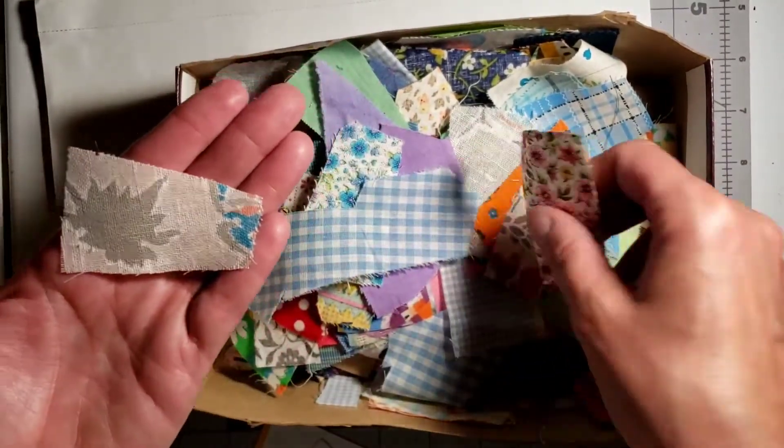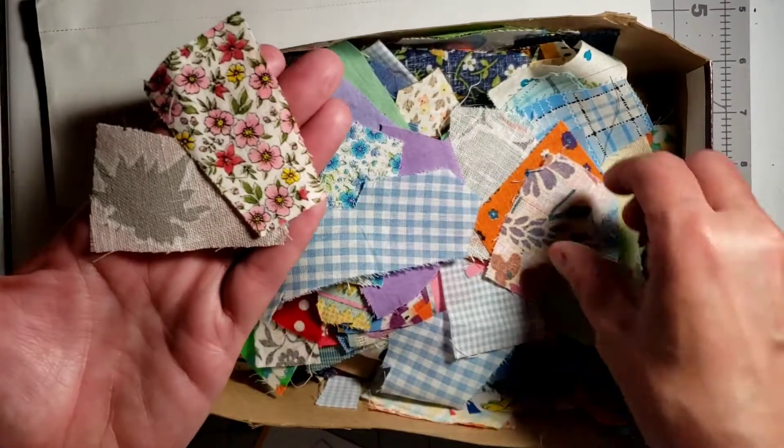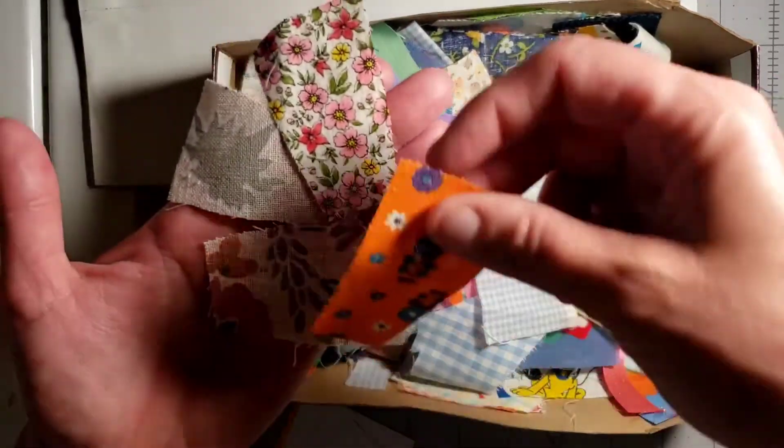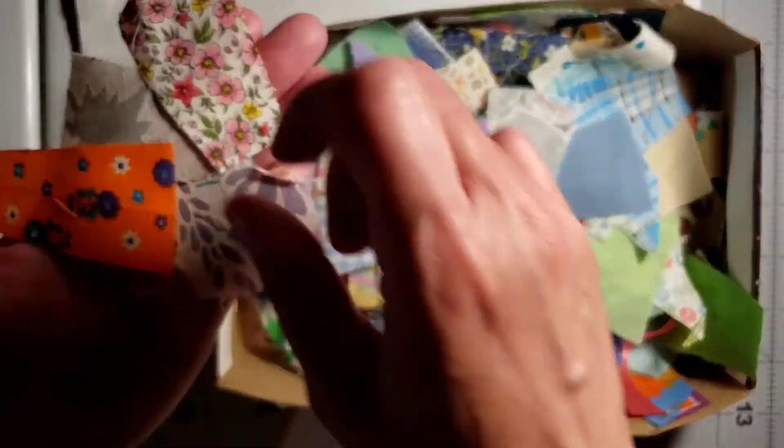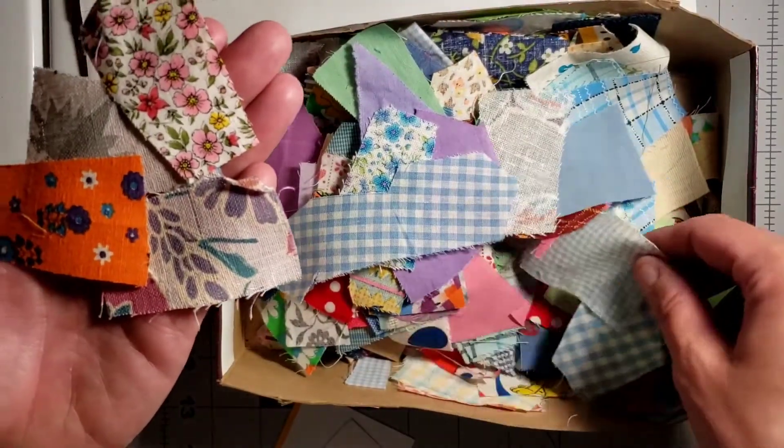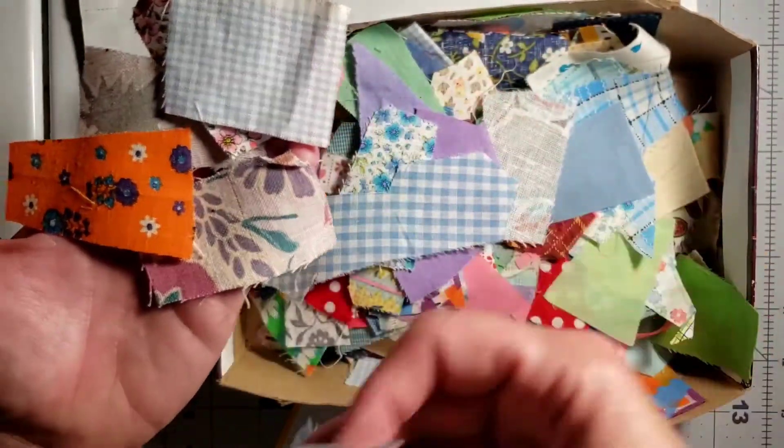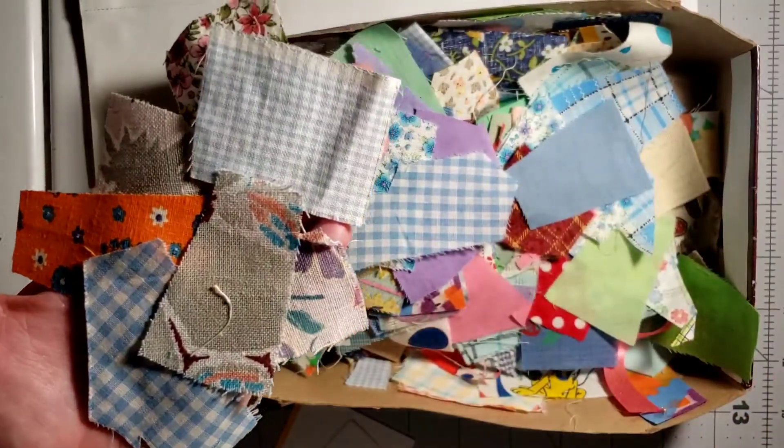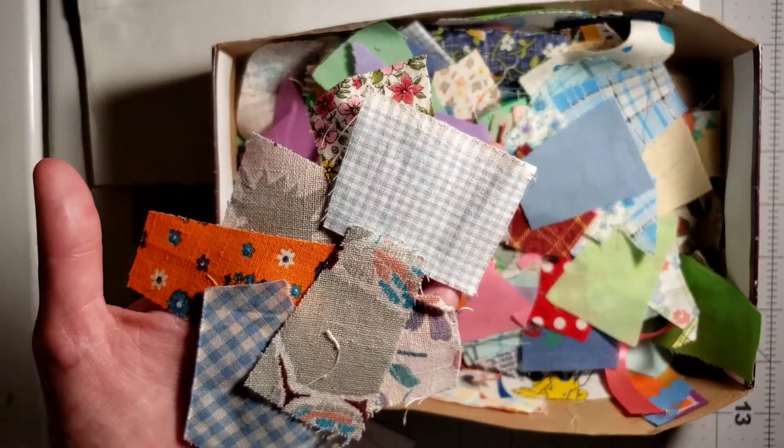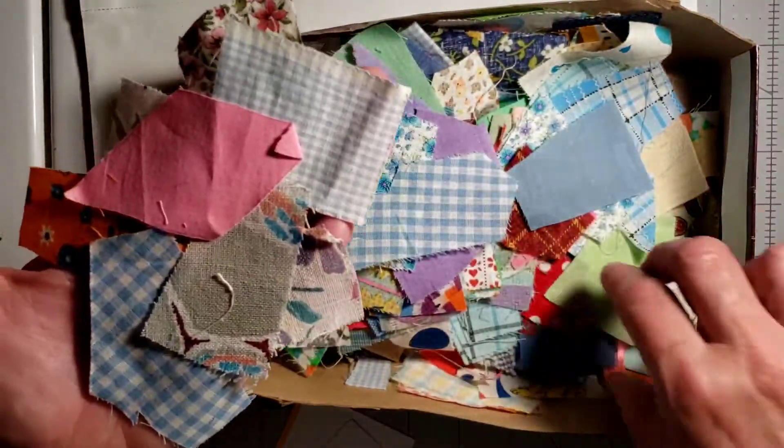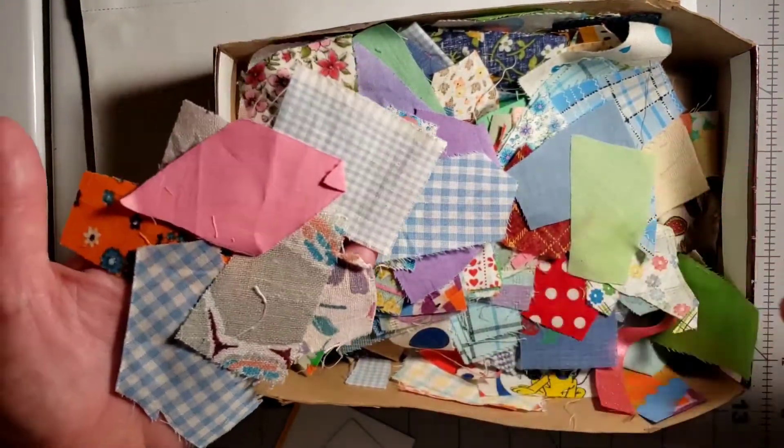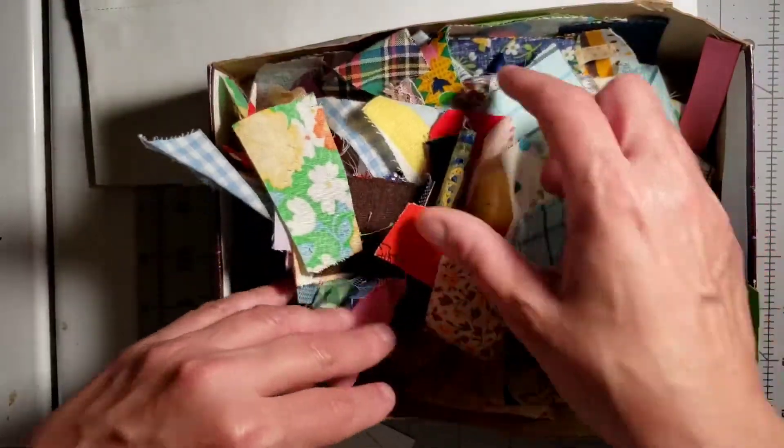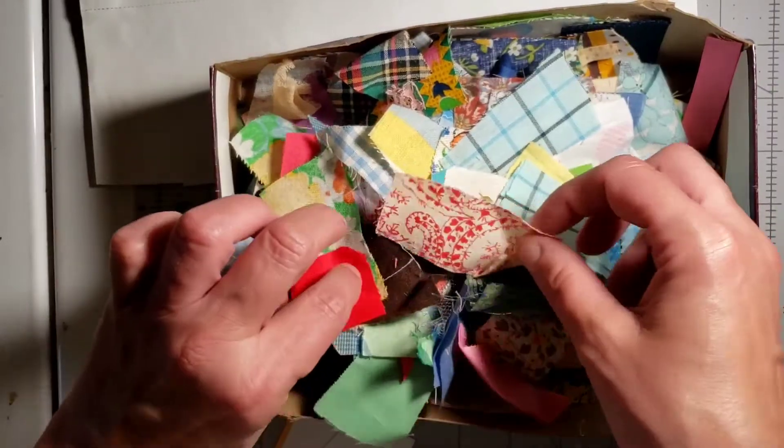This is my box of fabric scraps. I have a lot of vintage scraps in here too, just scraps that I've collected throughout the years. You can use any kind of scraps that you have, and your scraps do not have to match. That's the beauty of this project. You don't have to match your fabrics at all. You're just going to sew them onto your piece of two and a half by three and a half cardboard, and I'm going to show you how to do that because it's really easy.